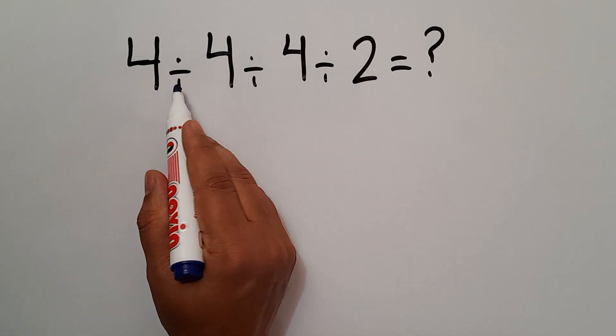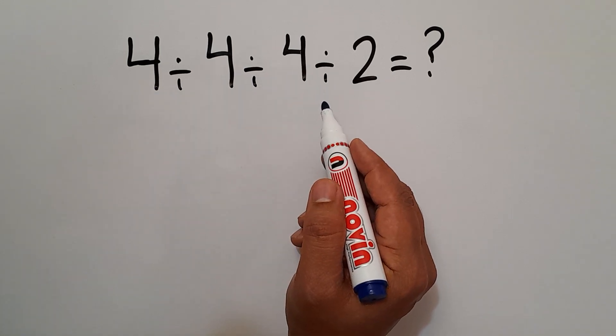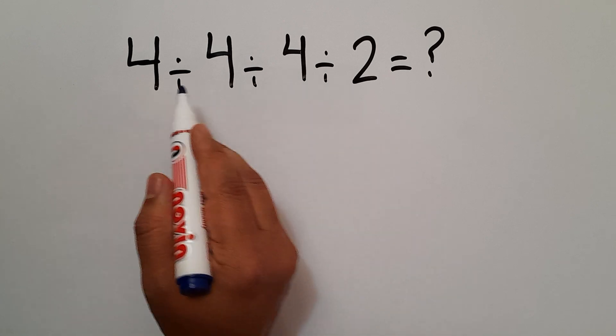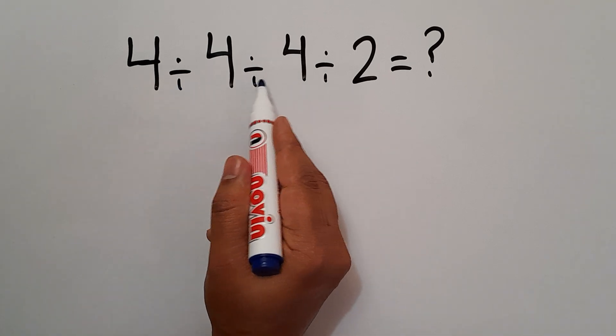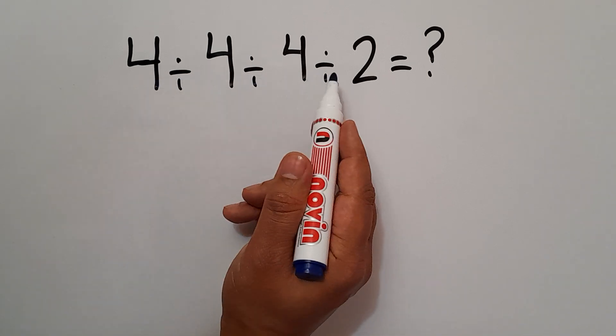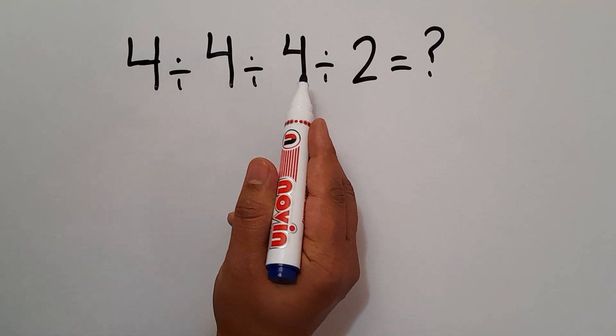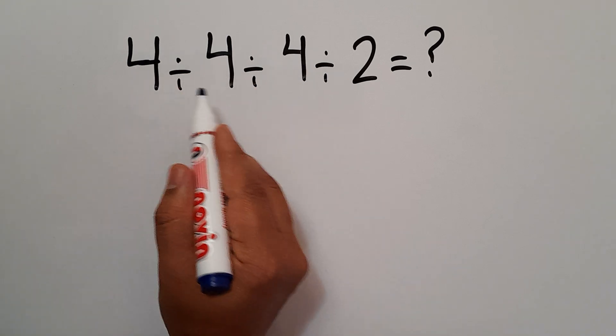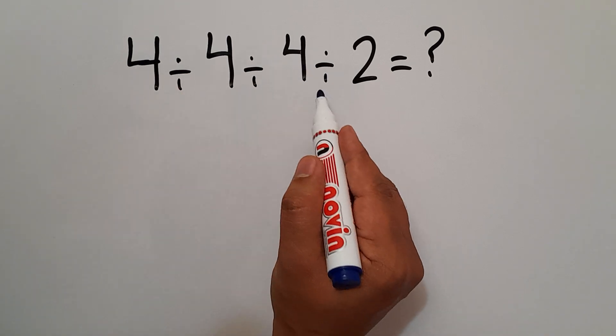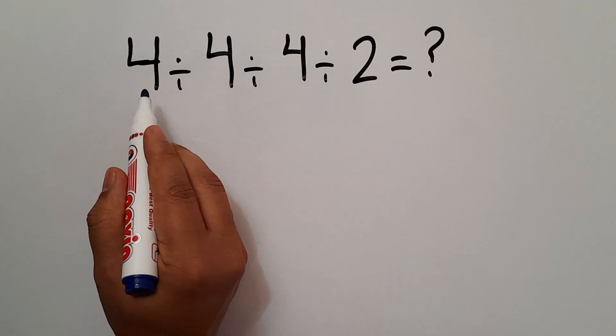In this expression, we have three divisions. As we know, when we have more than one division in one expression, we have to work from left to right. So first this division, then this division, and finally this division.